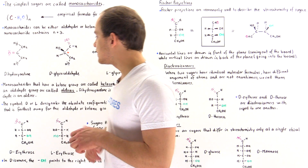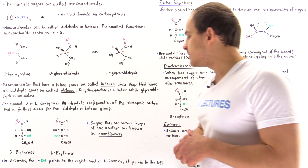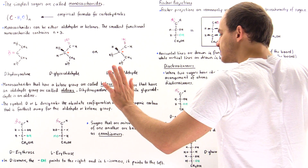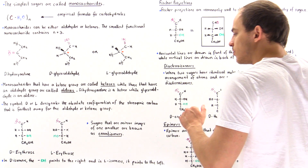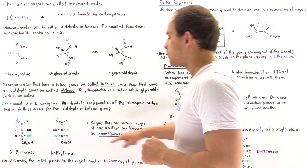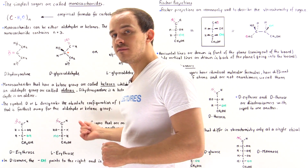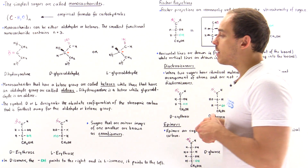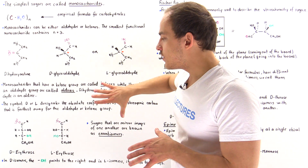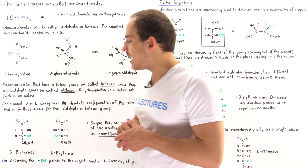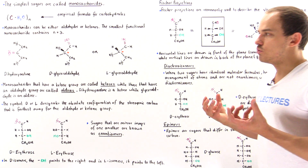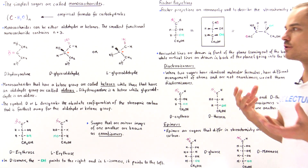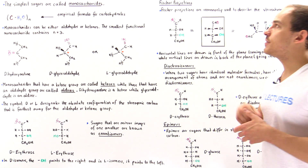In D isomers, the OH points to the right side, and in L isomers it points to the left. You can remember L as left, and D is the opposite — right. The problem with drawing monosaccharides in this manner is that the stereochemistry is not actually visible, because all bonds seem to lie along the same plane. But sugar molecules are three-dimensional. To describe their stereochemistry correctly, the most common mechanism used is Fischer projections.